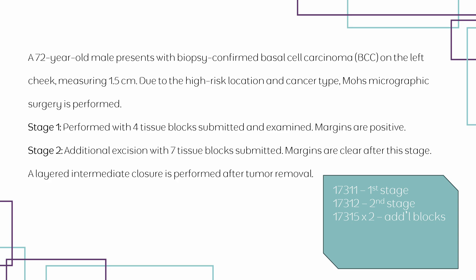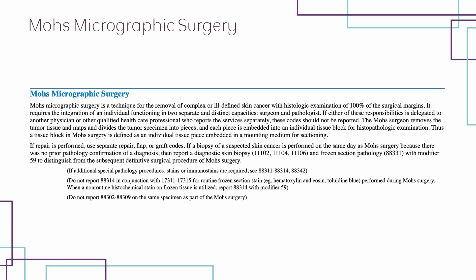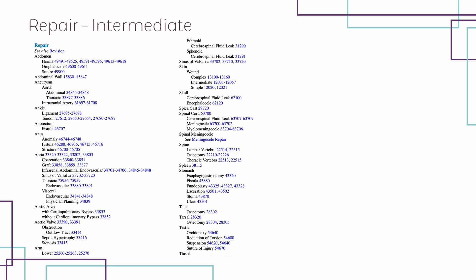We also have documentation of an intermediate closure performed in addition to the Mohs procedure. Per CPT guidelines, if a repair is performed, you can report that repair separately. Under the main term for repair, we look for the indentation for skin — the location of the repair — and from the documentation we know we are looking at an intermediate repair.